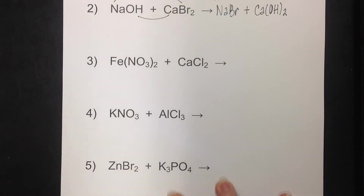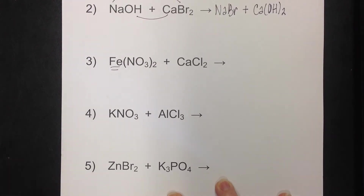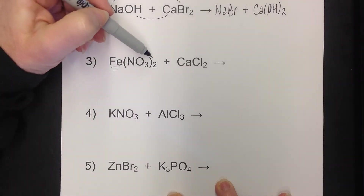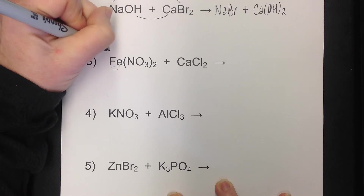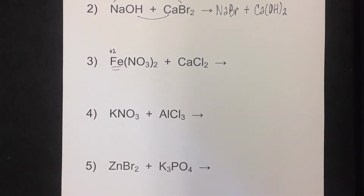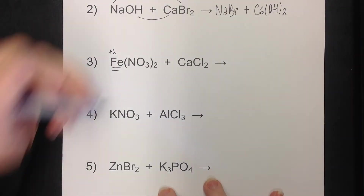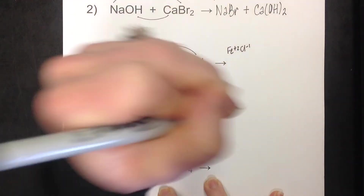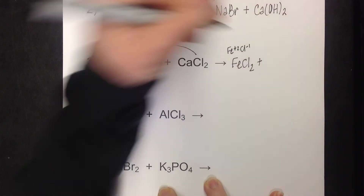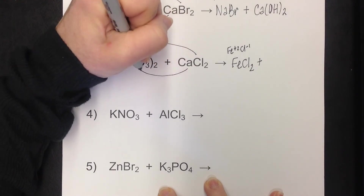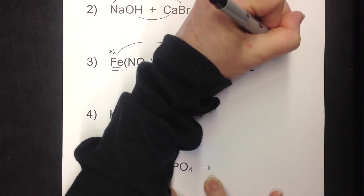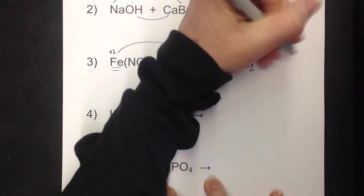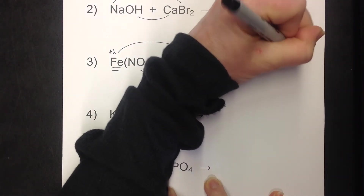Number three — be careful here because iron is a transition metal. I need to ask myself: what iron is that? The subscript 2 came from the crisscross, which tells me this is iron with a +2 charge. I need to know the correct charge for when I crisscross it with its new partner. Putting iron (Fe²⁺) with chloride (Cl⁻¹) gives FeCl₂, and calcium (Ca²⁺) with nitrate (NO₃⁻¹) gives Ca(NO₃)₂.